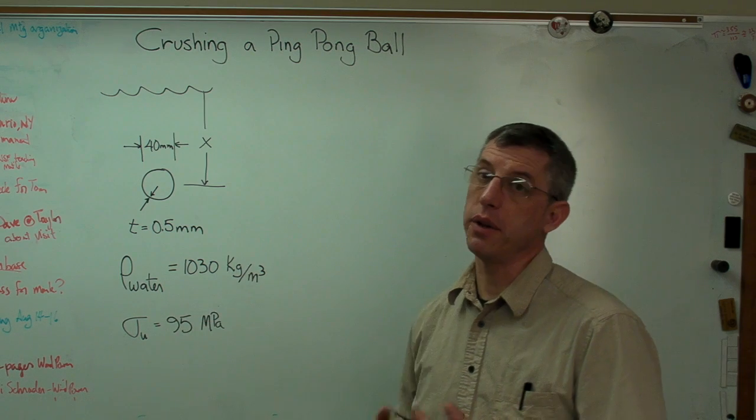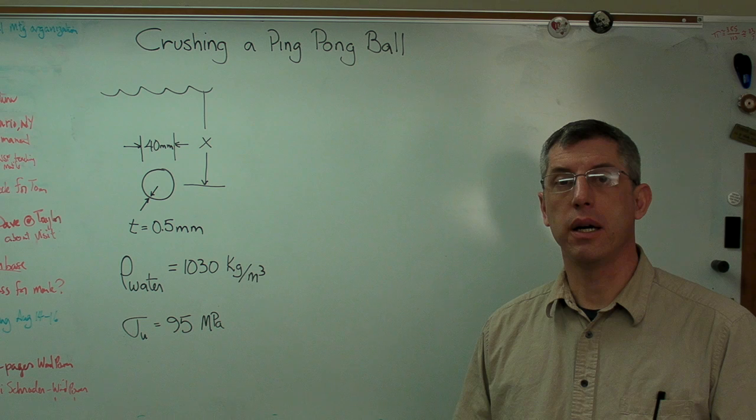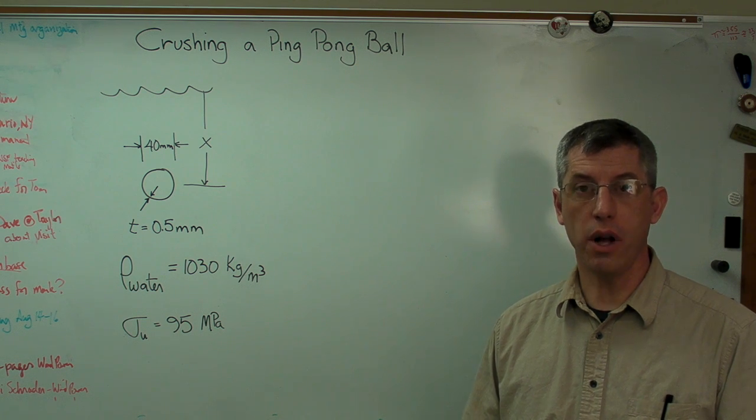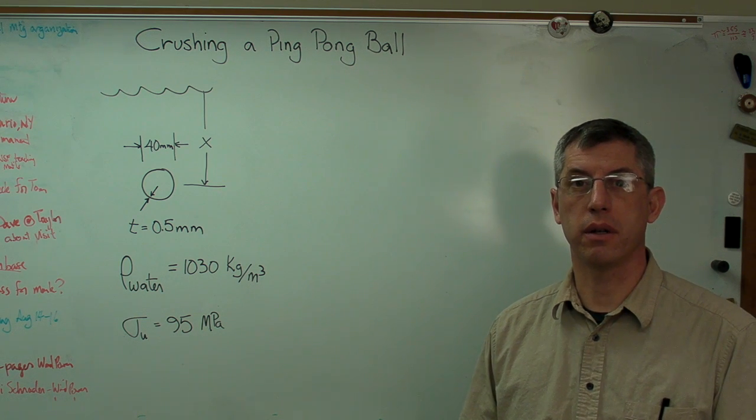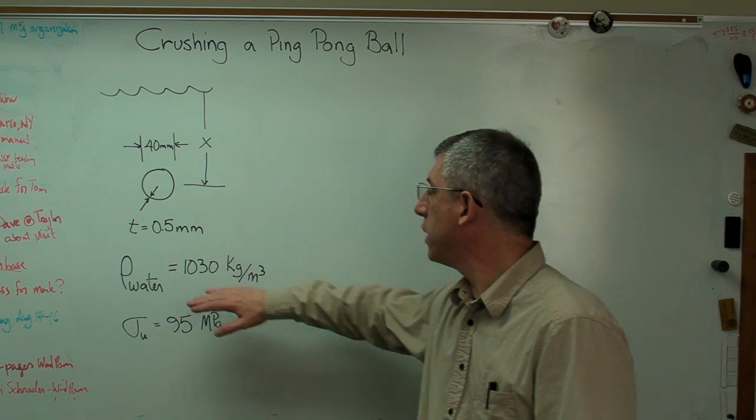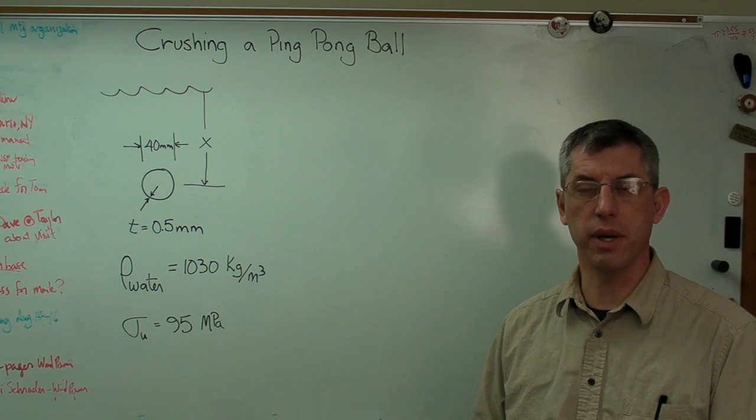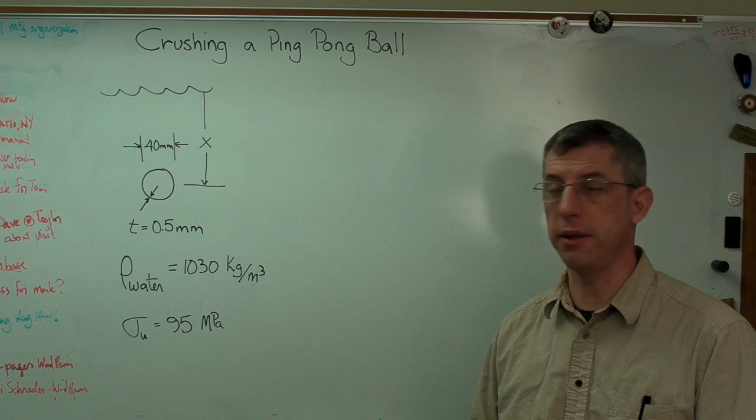The density of water - well the density of fresh water is 1,000 kilograms per cubic meter. This test was done in salt water on a dock going out into a salt water bay. And so the density of salt water is closer to 1,030 kilograms per cubic meter. It's slightly denser because of all the minerals dissolved in it.